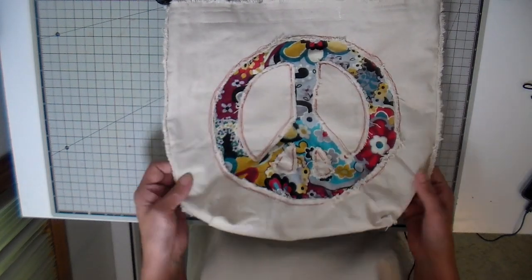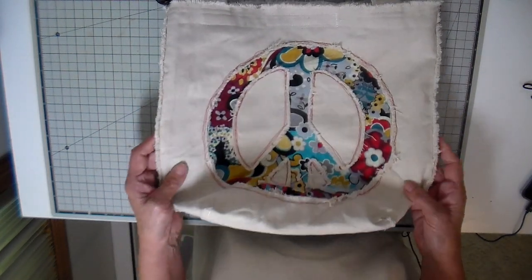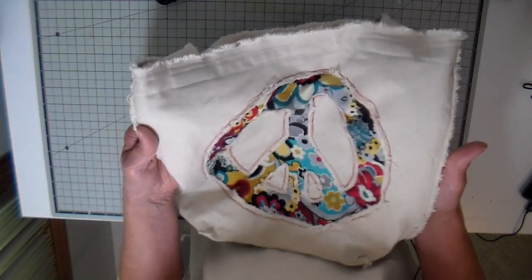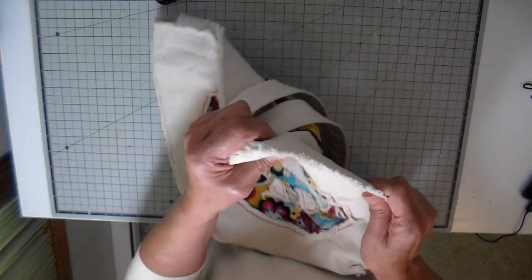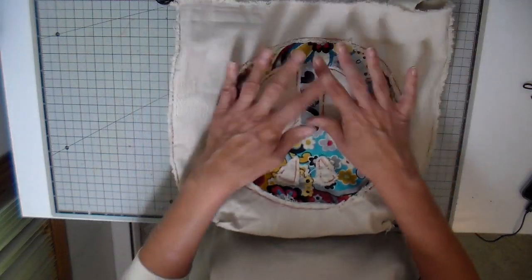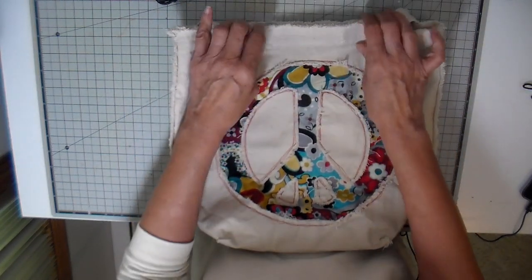I made this tote and I wanted to share with you how I made it. It goes together really easily. All the seams are sewn so that the raw seams are out and it has an interesting look to it.